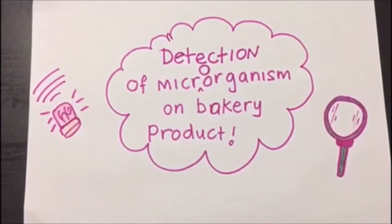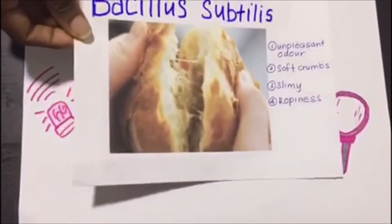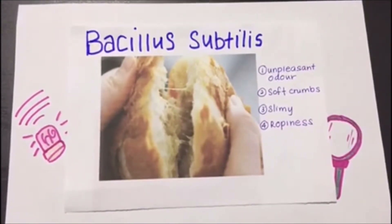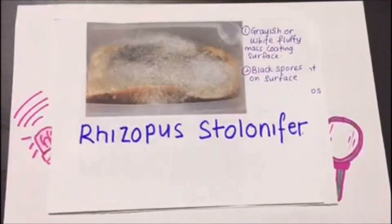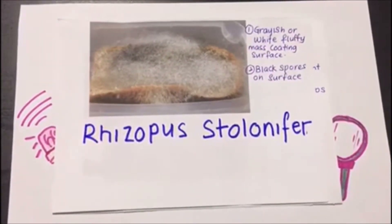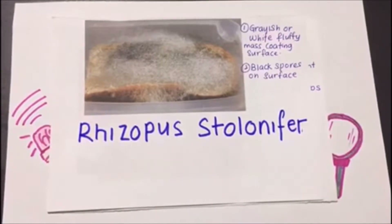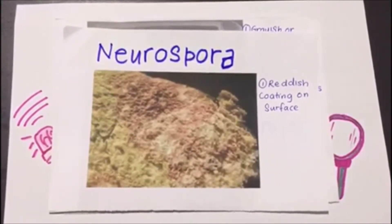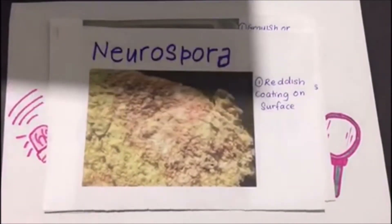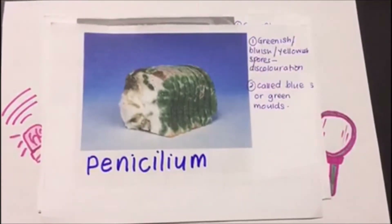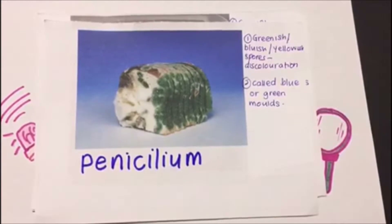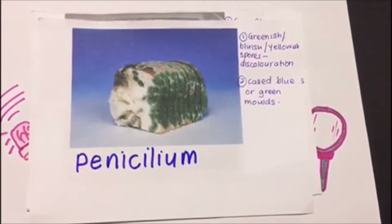Detection of microorganisms on bakery products: Bacillus subtilis initially produces an unpleasant fruity odor, followed by enzymatic degradation of the crumb, which becomes soft and slimy, causing ropiness in bread. Rhizopus stolonifer is observed as a greyish or white fluffy mass coating on the surface with black spores also visible. Neurospora is detected by the formation of a reddish coating on the surface. Penicillium, commonly called the blue or green mold, produces enormous quantities of greenish, bluish, or yellowish spores, causing discoloration of the bread.